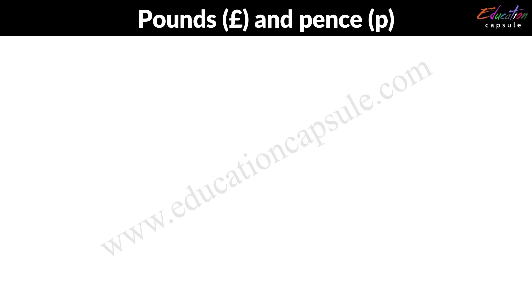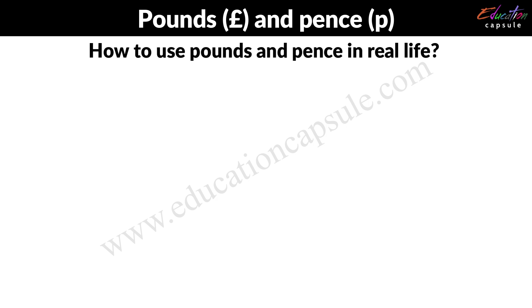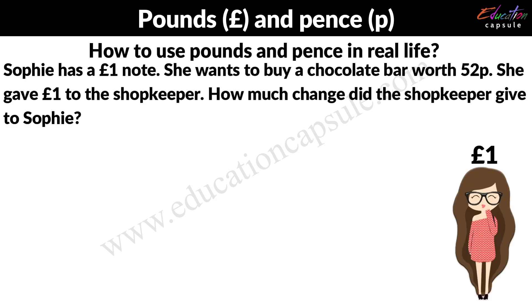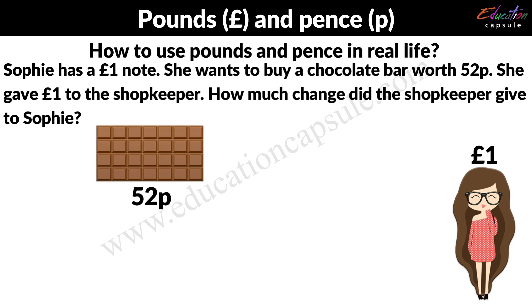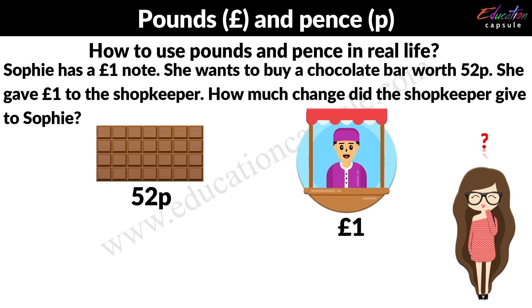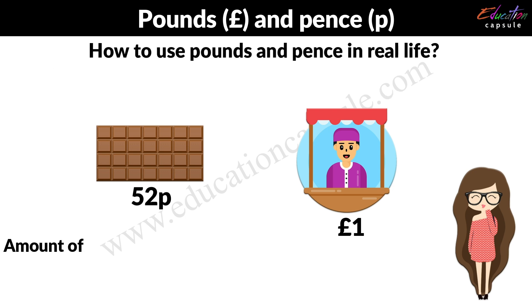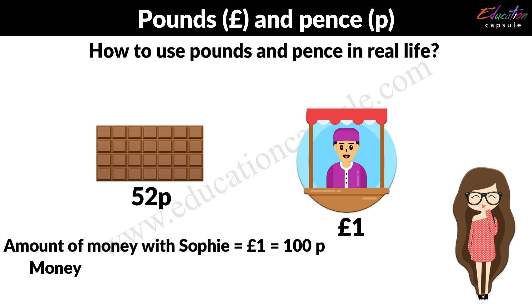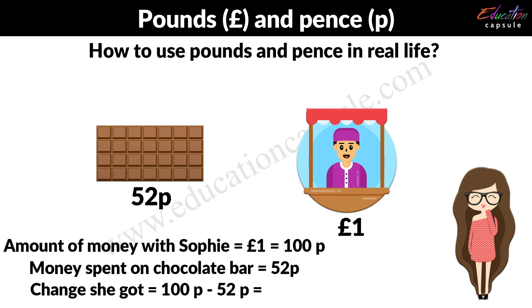Now, how to use pounds and pence in real life? For example, Sophie has 1 pound. She wants to buy a chocolate bar worth 52 pence. She gave 1 pound to the shopkeeper. How much change did the shopkeeper give to Sophie? The amount of money with Sophie is equal to 1 pound, which is the same as 100 pence. Money spent on the chocolate bar is 52 pence. The change she got is equal to 100 pence take away 52 pence.